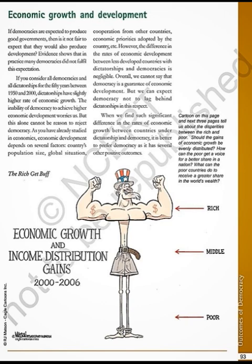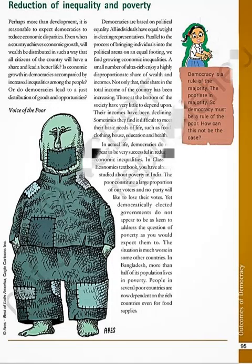On page 95, the topic to discuss is reduction of inequality and poverty. This is our expectation from democratic government — that inequality and poverty should be reduced. Perhaps more than development, it is logical to expect democracy to reduce economic disparities and inequalities. Even when a country achieves economic growth, will wealth be distributed so that all citizens have an equal share and lead a better life? Is economic growth in democracies accompanied by increased inequalities, or do democracies lead to equal distribution of goods and opportunities?